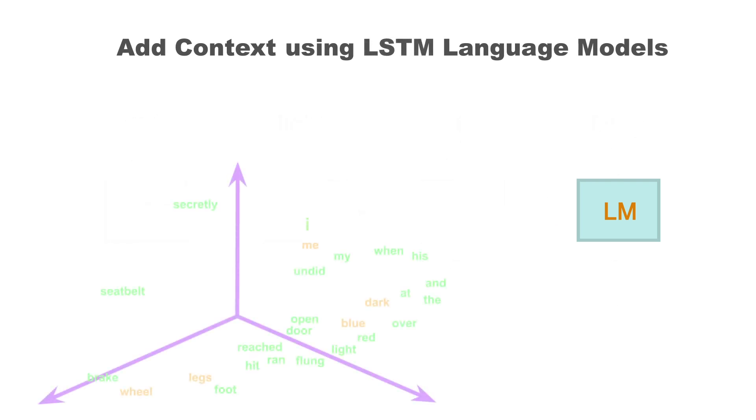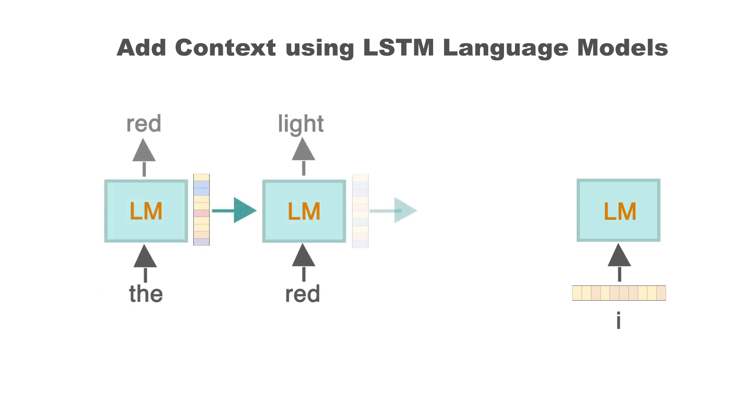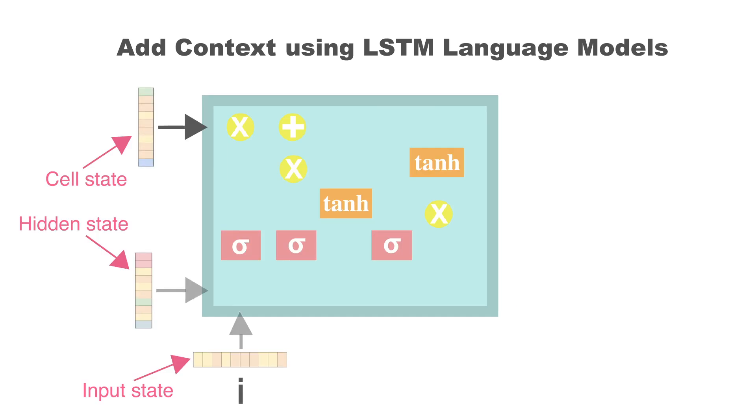The LSTM takes the vector representation of i from the semantic space to predict the word after i in this sequence. It also maintains a memory state from the words seen before i. Then, it applies several non-linear transformations to these vectors to generate a new representation and finally predict the next word.